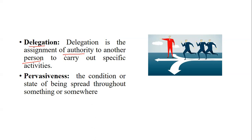Delegation is a principle of organization - the assignment of authority to another person to carry out specific activities. The next option is pervasiveness, which is the condition or state of being spread throughout something or somewhere - it means generality, universality, and being common. If we are pervasive, we are pervasive within an institution.